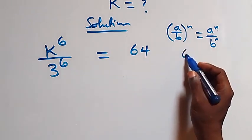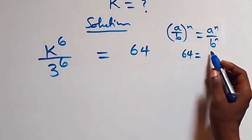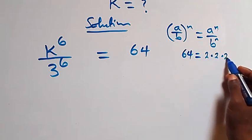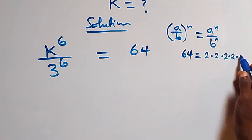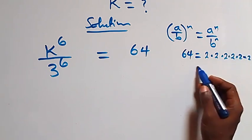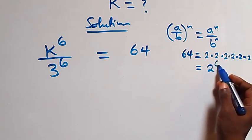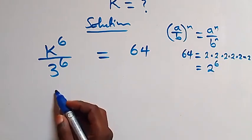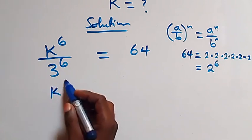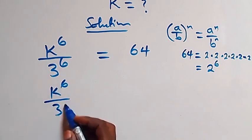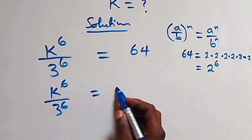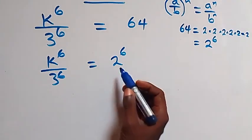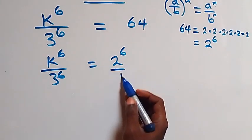We can write 64 as 2 multiplied six times, that is 2×2×2×2×2×2, which equals 2 raised to power 6. Then what we have becomes k raised to power 6 over 3 raised to power 6, equals 2 raised to power 6, and this is also over 1 here.